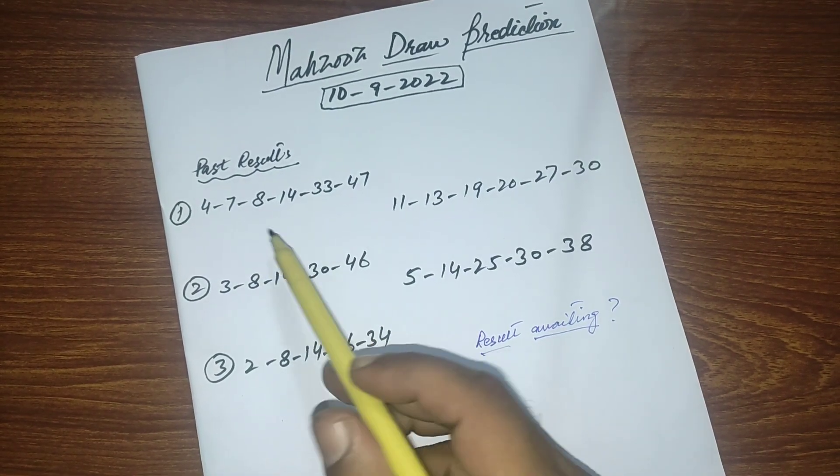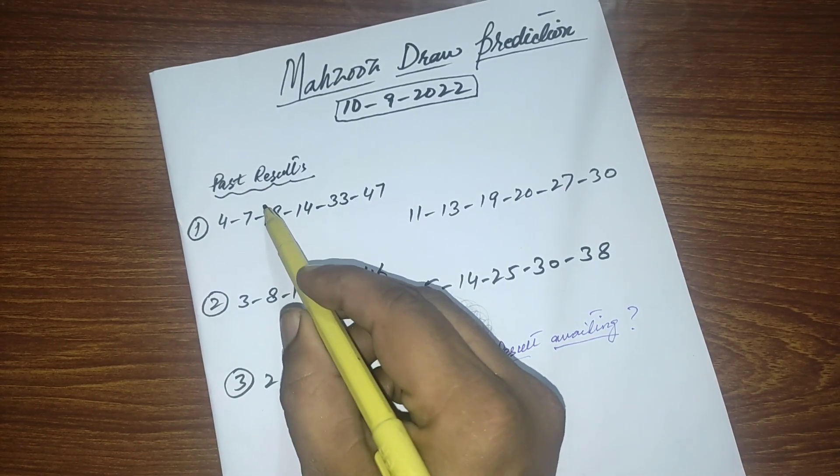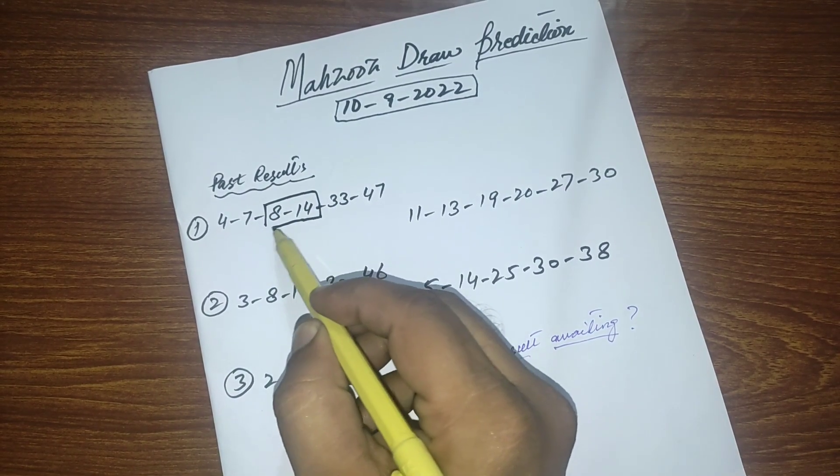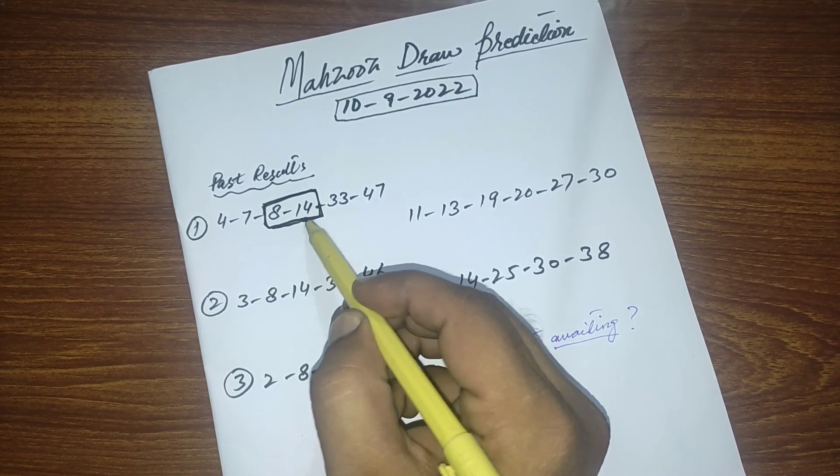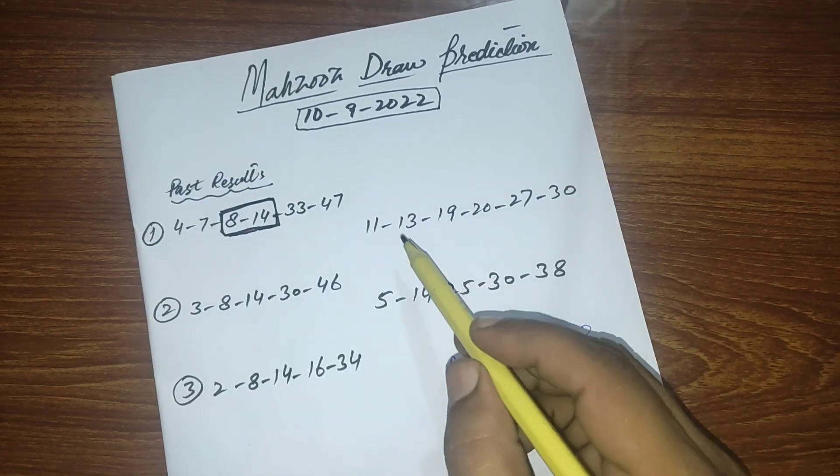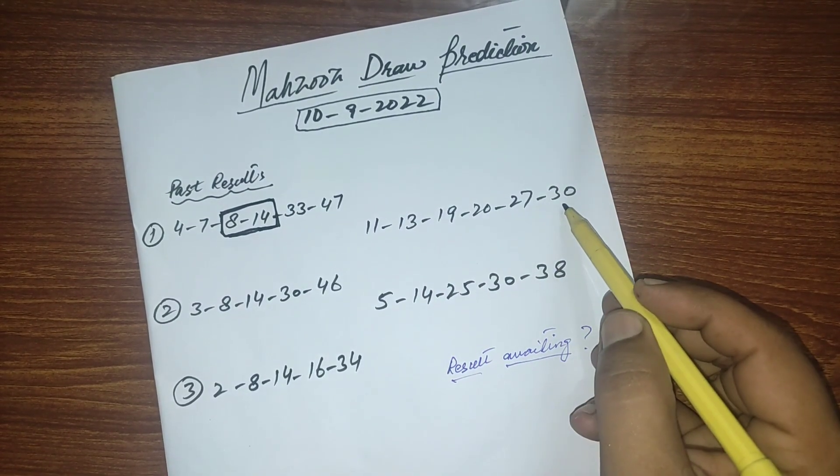Friends, these are some past results in which the two numbers 8 and 14 came together. You can see here the first time when 8 and 14 came, after that the result was 11, 13, 19, 20, 27, 30.